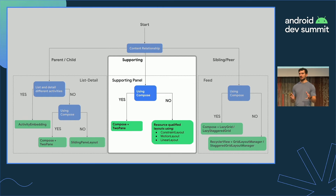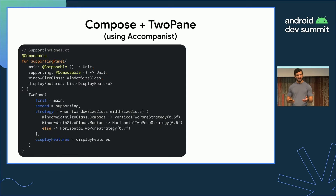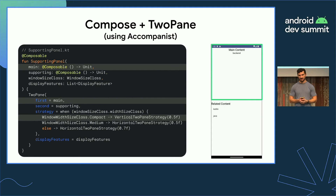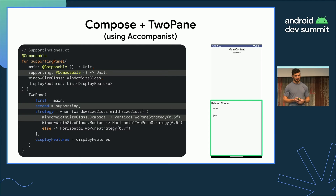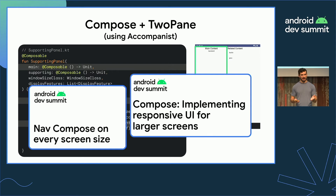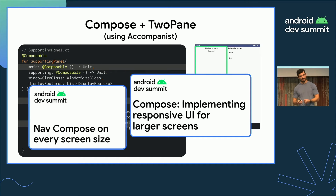We're going to the Compose implementation for supporting panel. We have a new two-pane composable in our Accompanist library that makes this much easier. Using the two-pane composable, you can configure your display or presentation strategy. In a compact width case — using the new window size class utility library — you can split the content vertically 50-50. In a medium width case, you can split it horizontally 50-50 for your main and supporting content. More detail will be covered in the later talk on implementing responsive UI for larger screens with Compose, and there's also a talk about navigation and Compose to figure out the best way to adapt your navigation model.